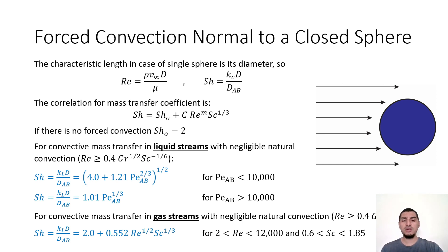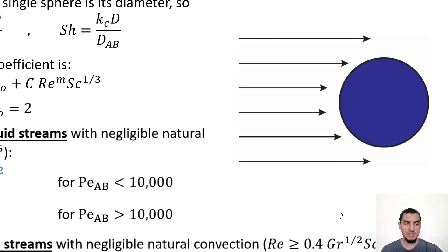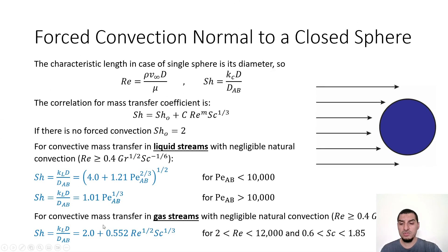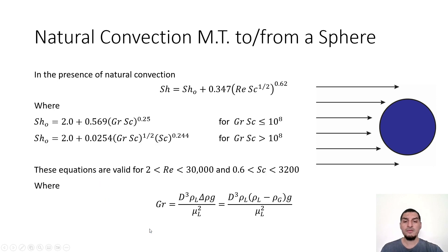For gas streams where there is no natural convection, which means Reynolds number is larger than or equal to 0.4 Grashof to the 1/2 Schmidt to the -1/6, if this condition is valid then we can use this correlation here. For natural convection we can use this relation. We said Sherwood number is 2 for natural convection, and you can use this correlation for Grashof multiplied by Schmidt number less than 10 to the 8.